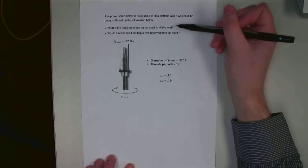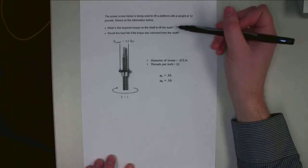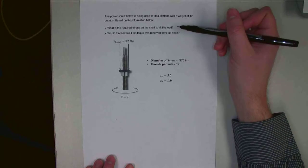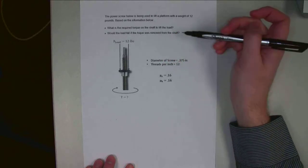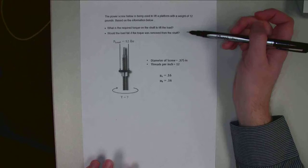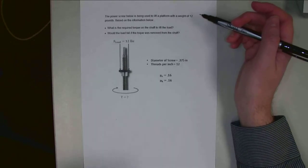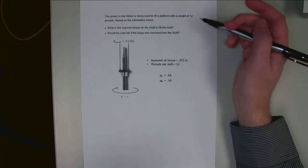I want to figure out the required torque needed to lift the load at a constant rate, and also, would the load fall if the torque is removed from the shaft? If I turn off the motor, is the platform going to stay where it is, or is it going to fall down?